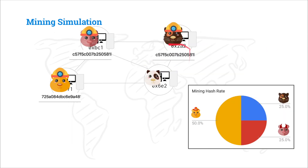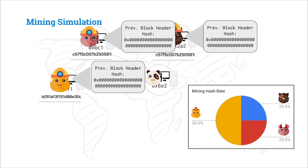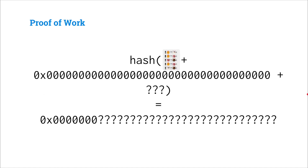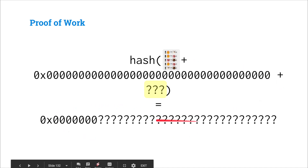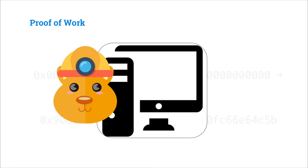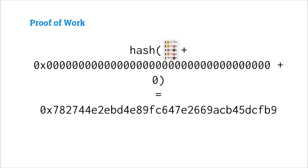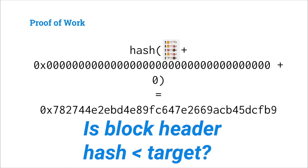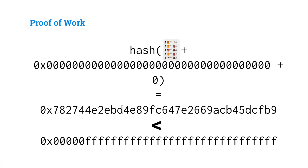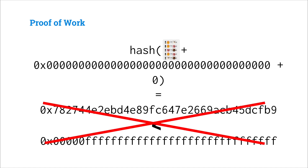What exactly is happening behind the scenes? At the start of the network, everyone has agreed there is no previous block, so the previous block header they are mining on top of is just the zero hash. The problem everyone's computers are trying to solve is: what nonce can you hash together with the transactions of the first block and the previous block hash to get a block hash with a certain number of leading zeros? Alice first tries a nonce of zero, computes that hash and gets 782744. The block header hash is not less than the target — not enough leading zeros.